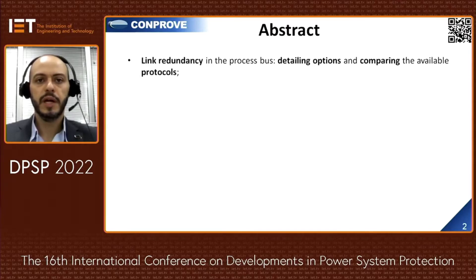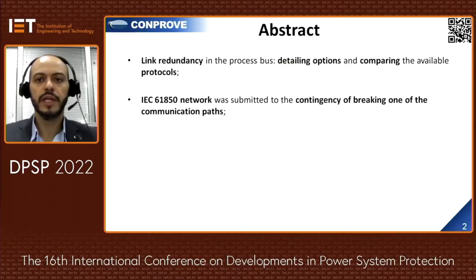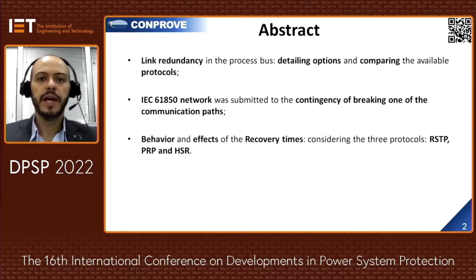This paper aims to approach Link Redundancy in the Process Bus, detailing the protocol options and comparing them. It was implemented an IEC 61850 network with Link Redundancy consisting of an IED and a test set simulating a merging unit. This network was submitted to contingencies of breaking one communication path. The behavior and the effects of the recovery time were evaluated and discussed over the three Link Redundancy Protocols: RSTP, PRP, and HSR.